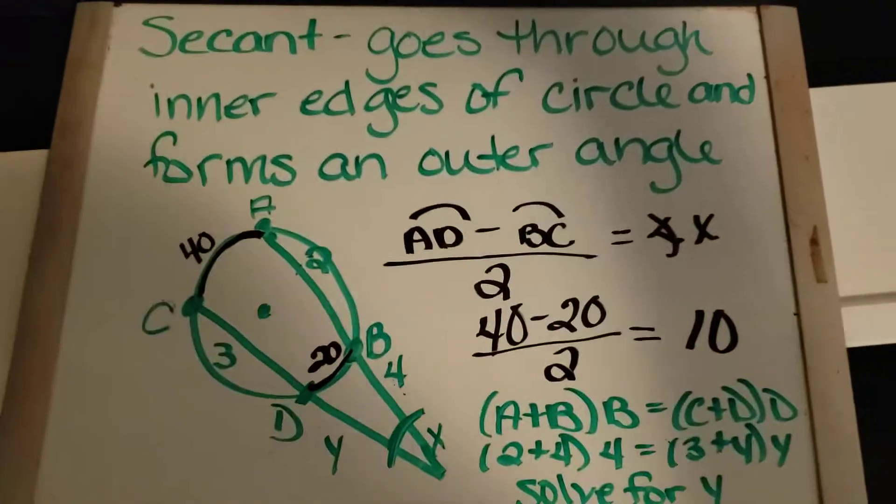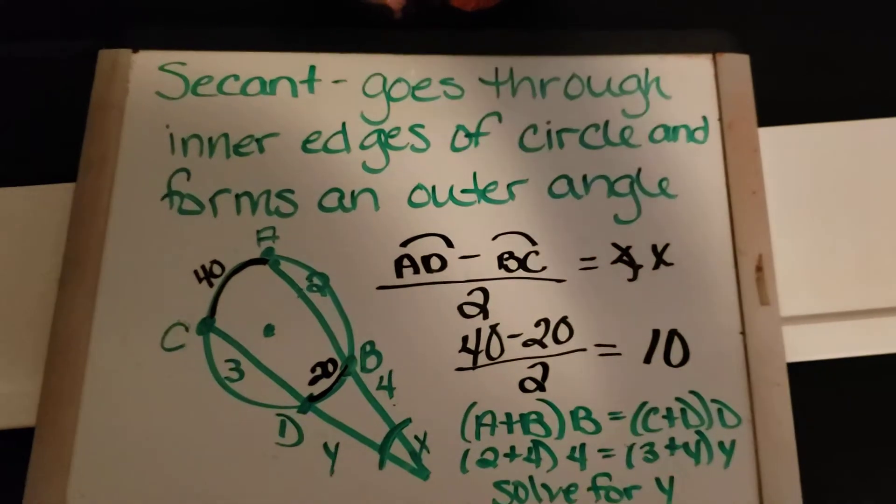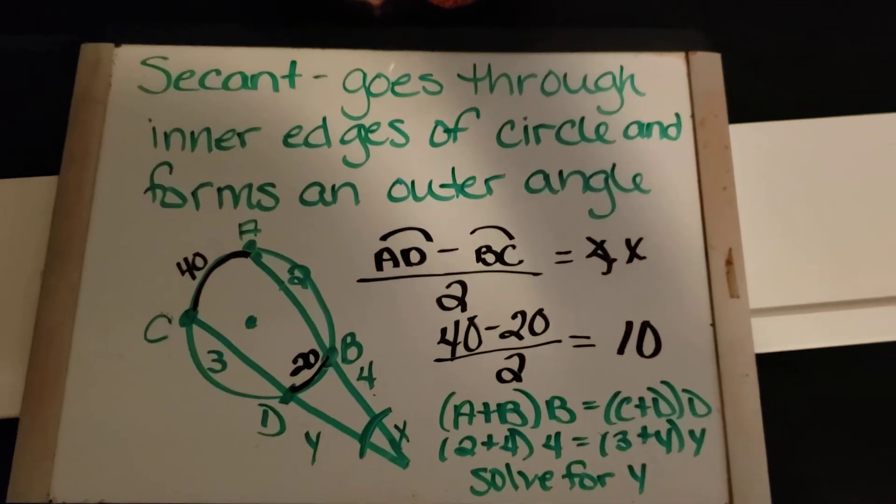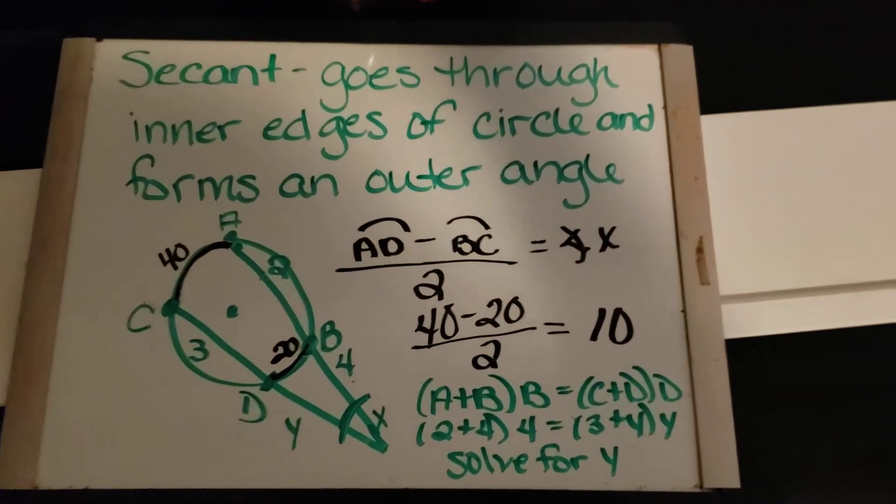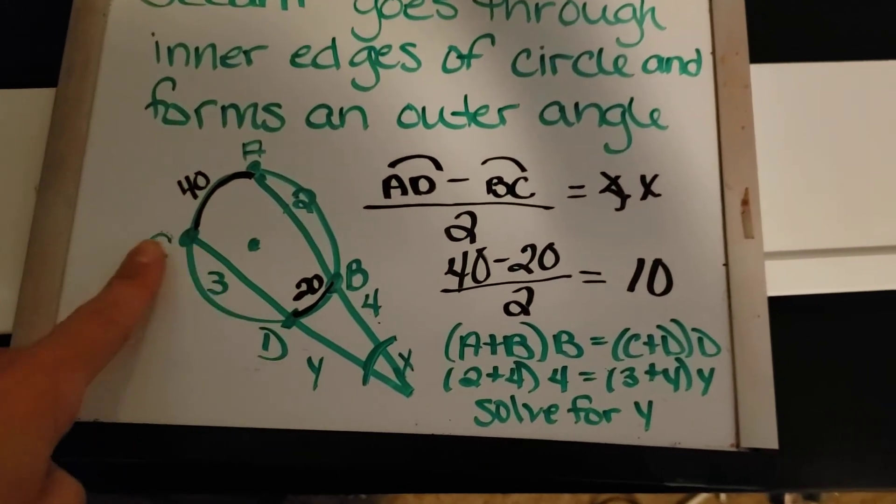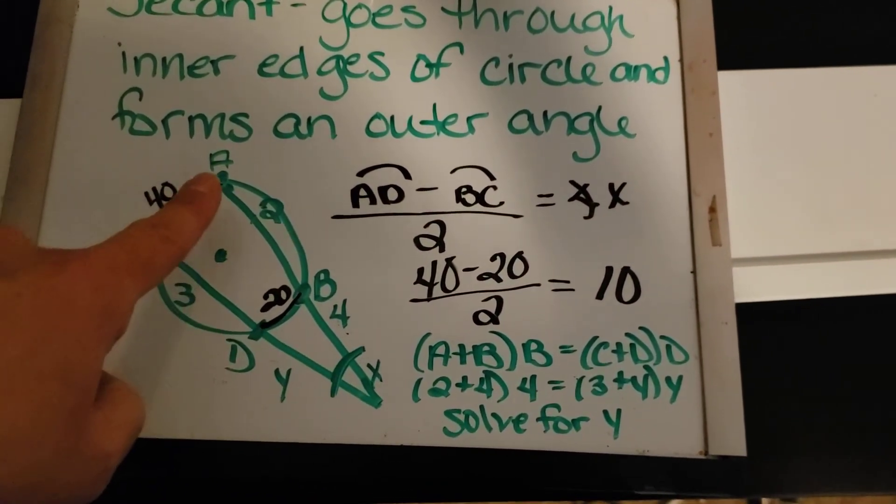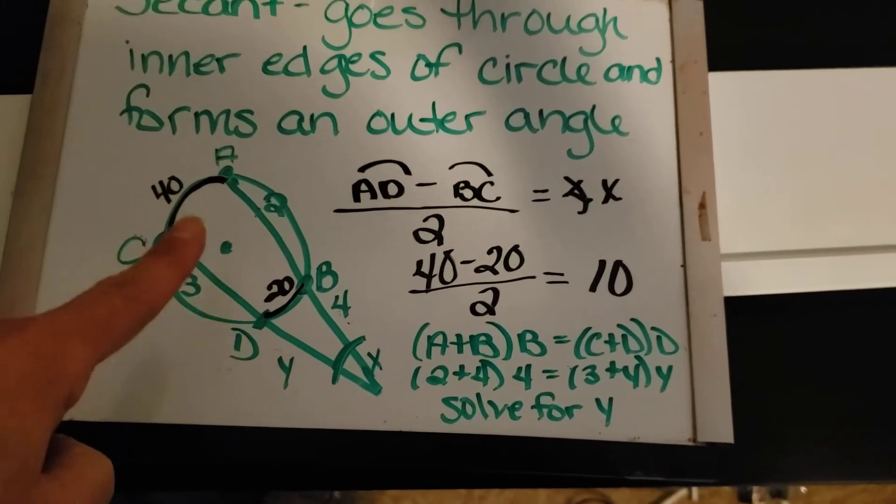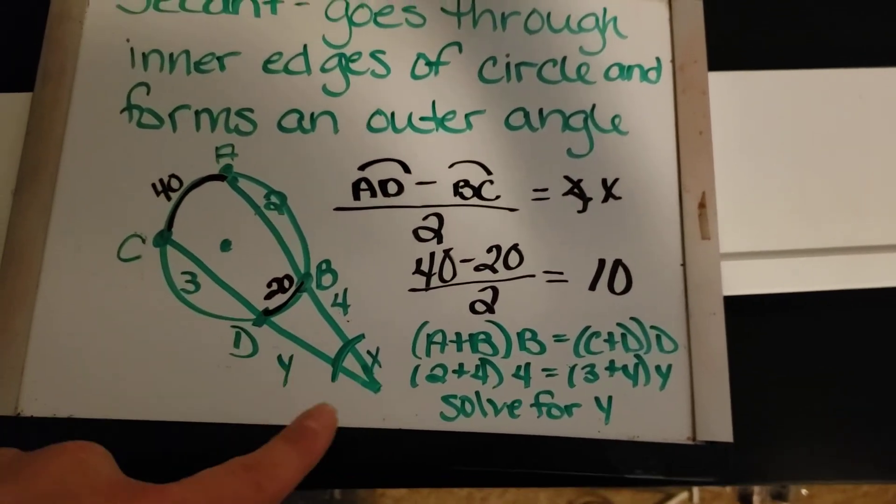So then we also have secant and a secant goes through the inner edges of a circle and forms an outer angle. So this is my circle. That's a secant line, that's a secant line. I've got two arcs and I've got my angle.